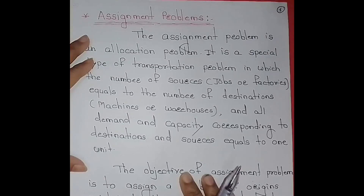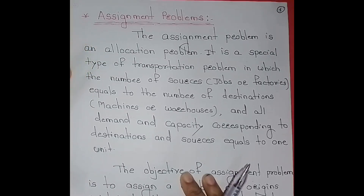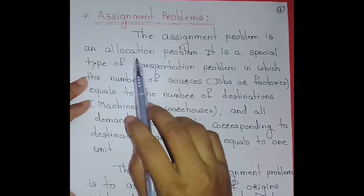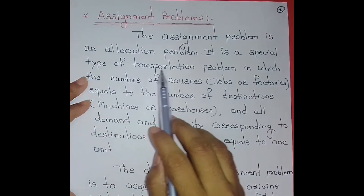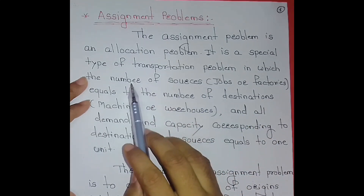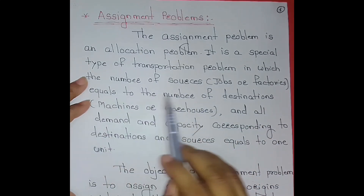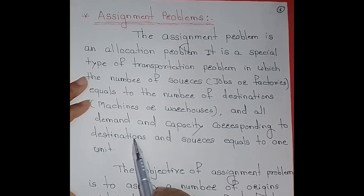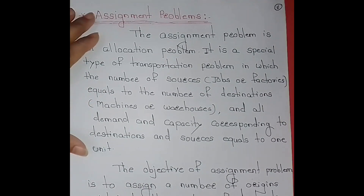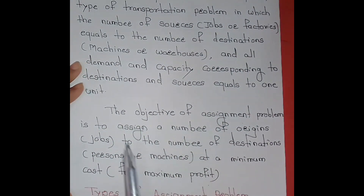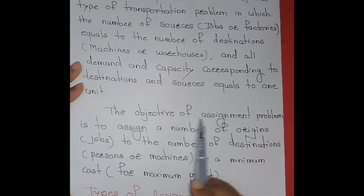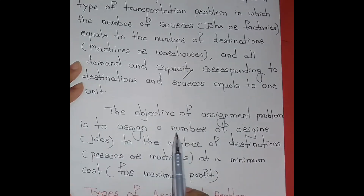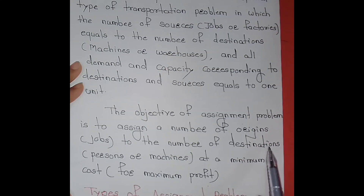Today we are going to see assignment problems. The assignment problem is an allocation problem. It is a special type of transportation problem in which the number of sources equals the number of destinations, and all demand and capacity corresponding to destinations and sources equals one unit. The objective of the assignment problem is to assign a number of origins to the number of destinations at a minimum cost or maximum profit.